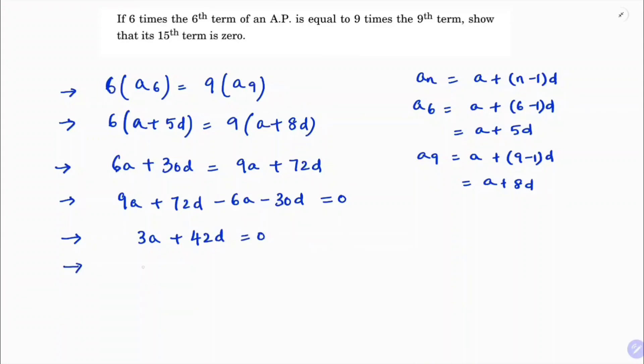So here I will take 3 common, I will get A plus 14D, because 3 times 14 is 42. So A plus 14D equals 0.